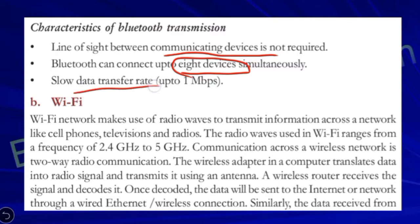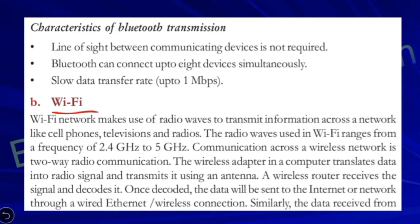The Bluetooth data transfer rate is 1 Mbps. The latest version supports up to 2 Mbps. The next wireless technology is Wi-Fi. Wi-Fi is also a radio wave user, operating at a frequency range of 2.4 GHz to 5 GHz. Wi-Fi stands for Wireless Fidelity.